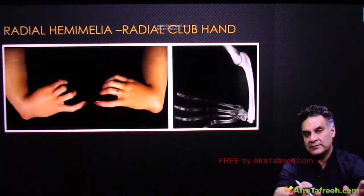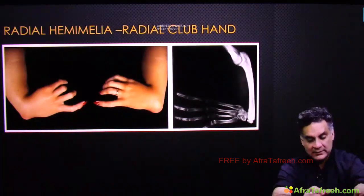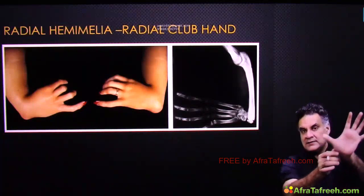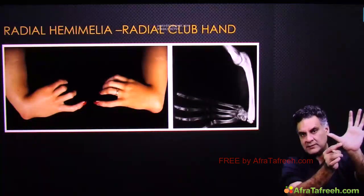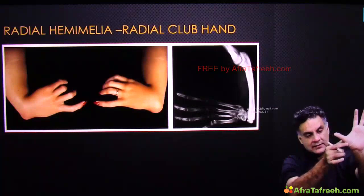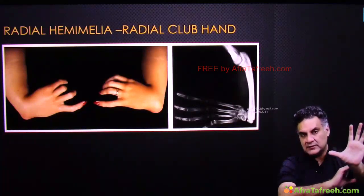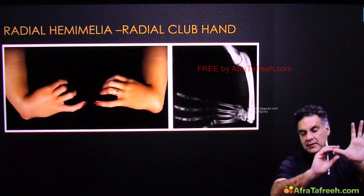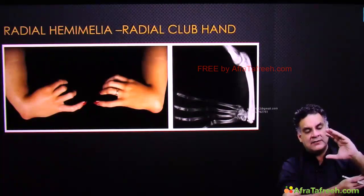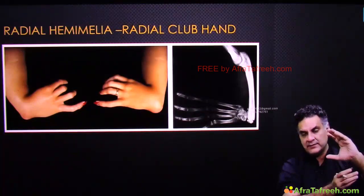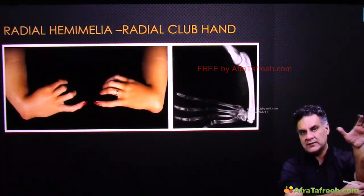If a bone is absent, it is called hemimelia — not just absence of the bone but the entire axis. In radial hemimelia, the thumb will not be there, the radius will not be there, the muscles on the radial side will not be there, the radial artery will not be there, and the hand will deviate towards the unsupported radial side. If the ulna is not there, it will deviate towards the ulna.